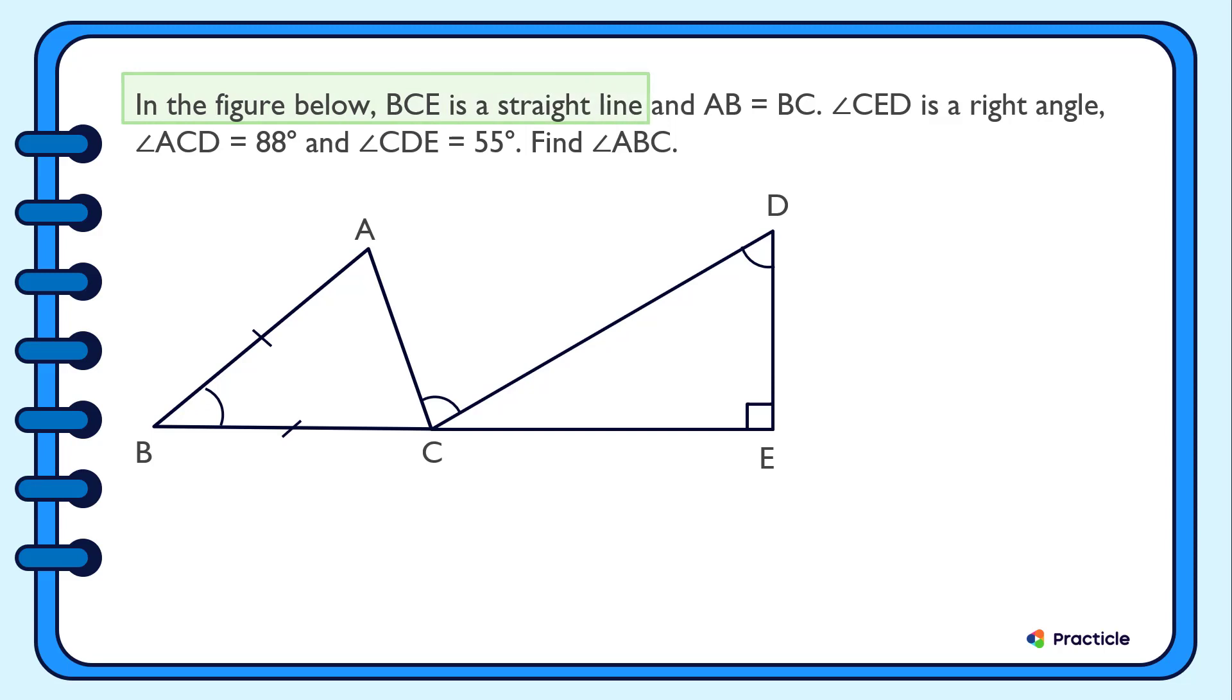In the figure below, BCE is a straight line and AB equals BC. So what can we tell? Since AB and BC are equally long, this means that triangle ABC must be an isosceles triangle, correct?